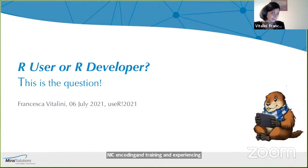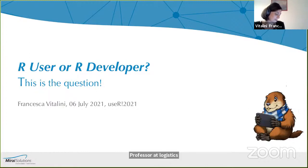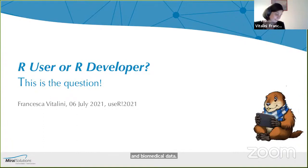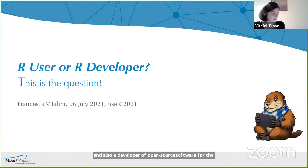Then we have Sandrine Dubois, a Professor and Chair of the Department of Statistics and Professor of the Division of Biostatistics at UC Berkeley, with a research focus on statistical methods and software for biomedical and genomic data. She's also a founding core developer of the Bioconductor project, together with Raffaele Irizarry, a Professor of Applied Statistics at Harvard and Chair of the Department of Data Science at Dana-Farber Cancer Institute, also a developer of open source software and part of the Bioconductor project since the very beginning.